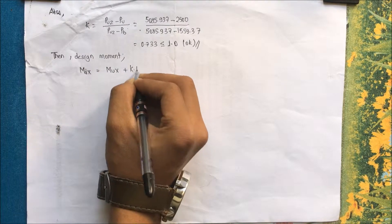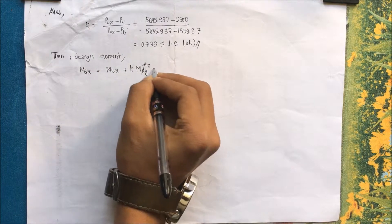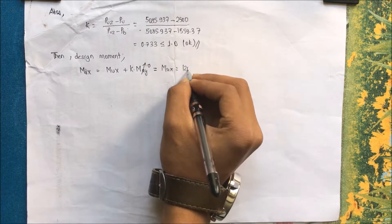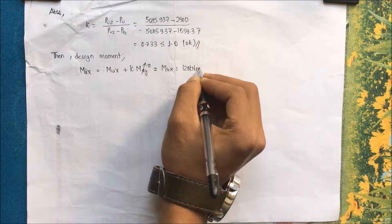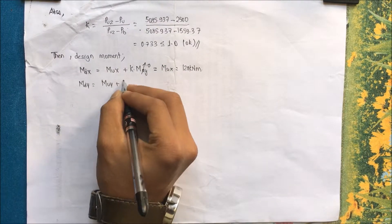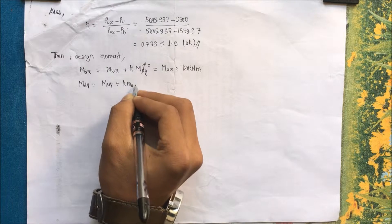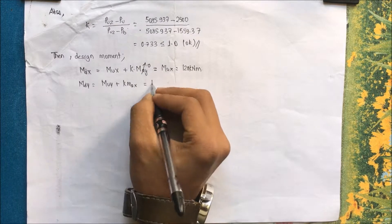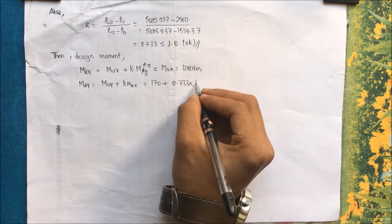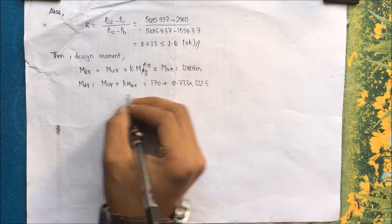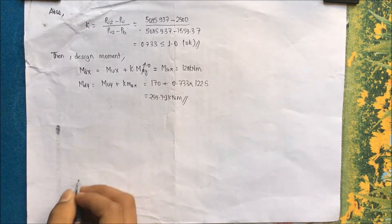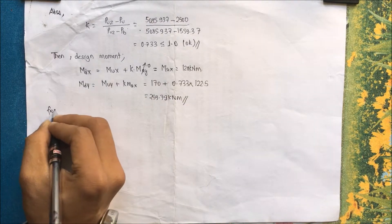Design moment mdx = mux + k × may = 120 + 0 = 120 kN·m (no additional moment along y since the column is not long in that direction). Design moment mdy = muy + k × max = 170 + 0.733 × 122.5 = 259.79 kN·m.